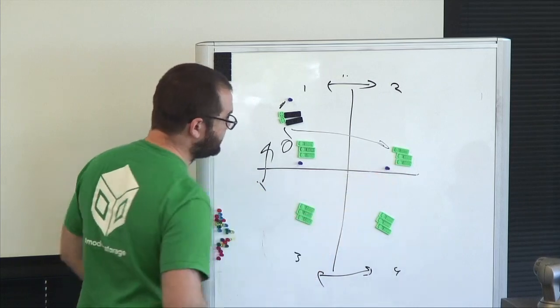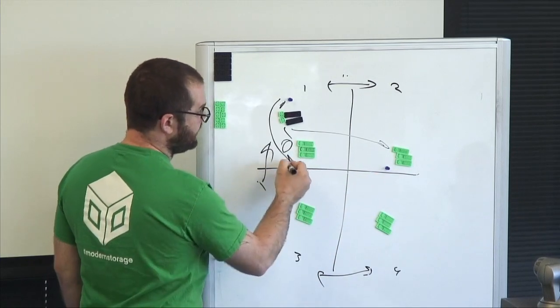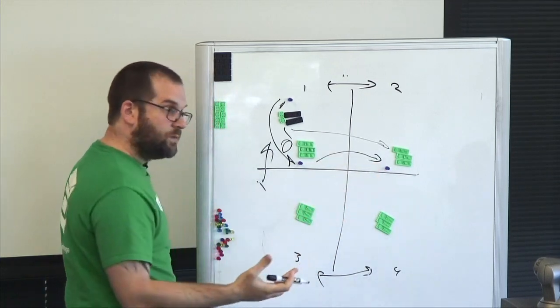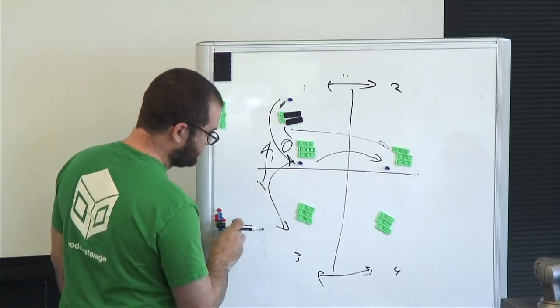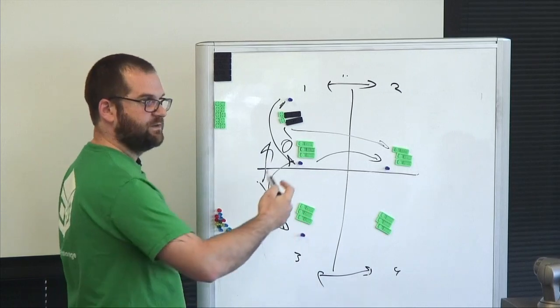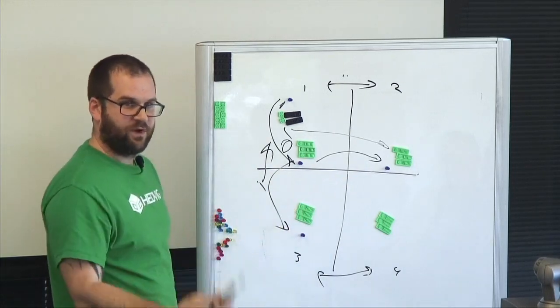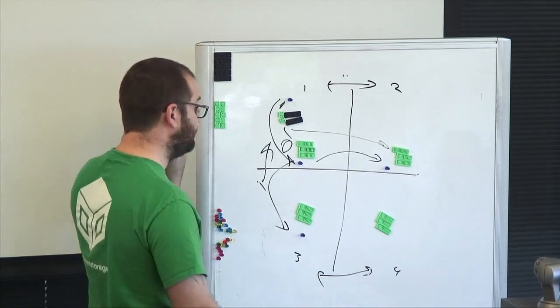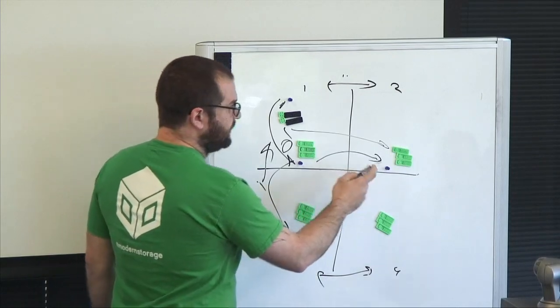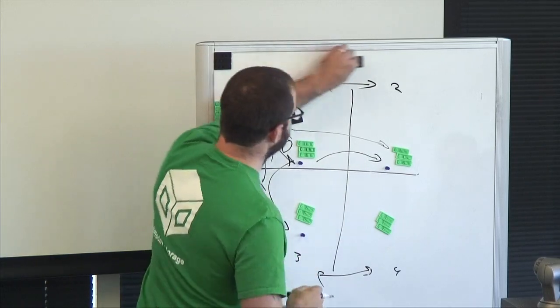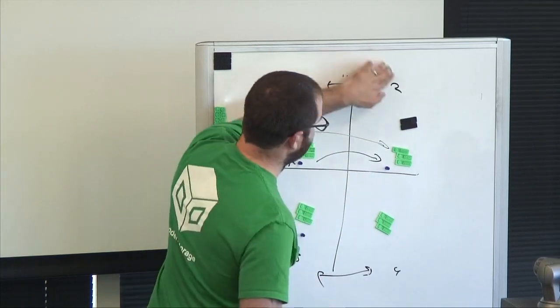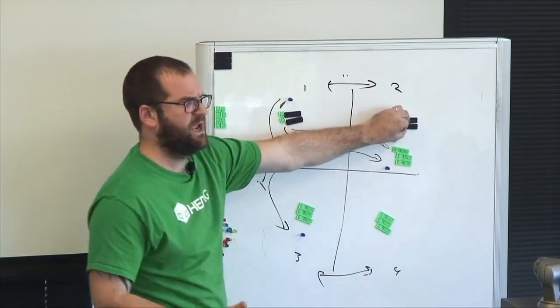Writes are distributed as discussed. A write comes in, we do the latency local acknowledgement. Writes are sent synchronously across both locations and we wait for one to respond so we've got the quorum, the majority set.